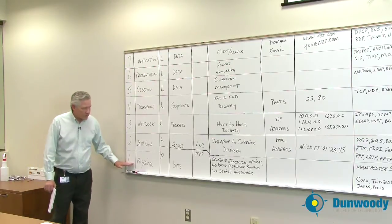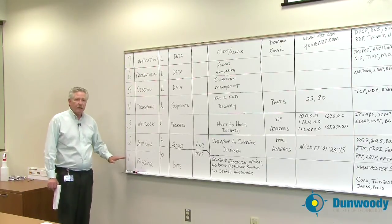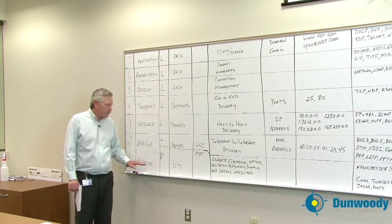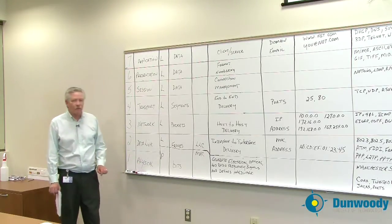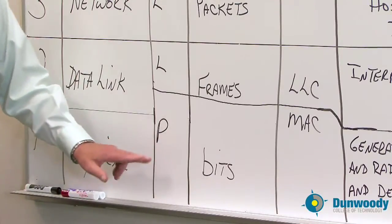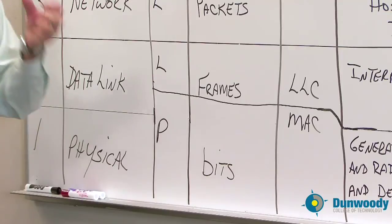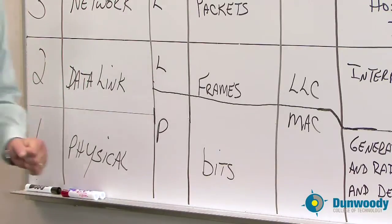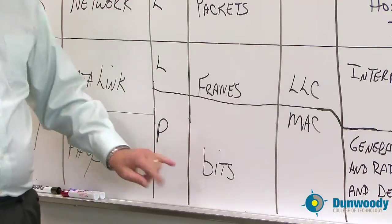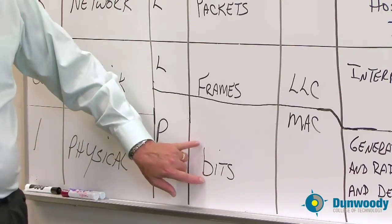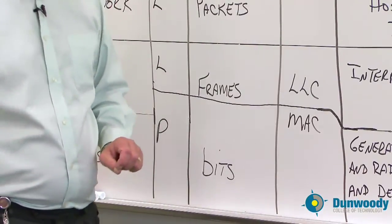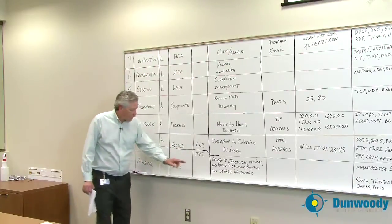The physical layer is the layer that actually conveys the bitstream, whether it be through an electrical connection, optical, or radio frequency. Obviously it's physical — you can touch it, wire you can touch, you can mold it. The PDU, or protocol data unit, is called bits, because that's what is streamed across the physical layer.